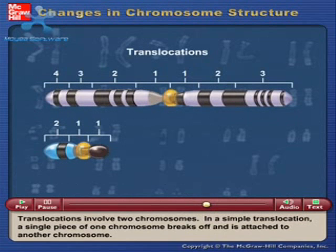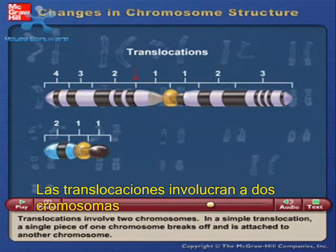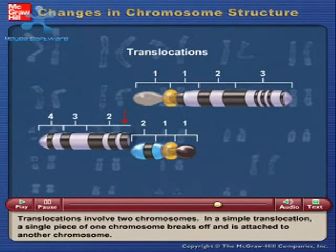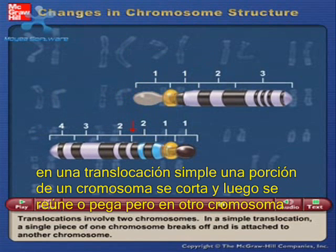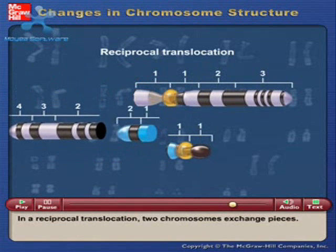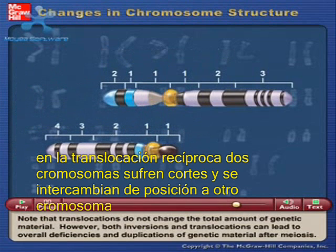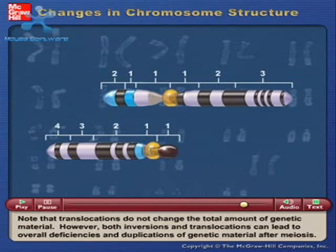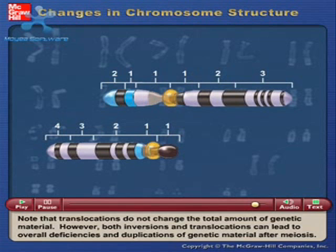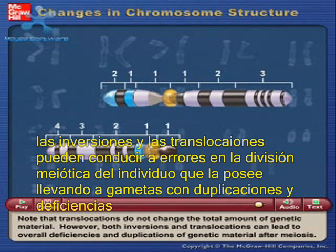Translocations involve two chromosomes. In a simple translocation, a single piece of one chromosome breaks off and is attached to another chromosome. In a reciprocal translocation, two chromosomes exchange pieces. Note that translocations do not change the total amount of genetic material. However, both inversions and translocations can lead to overall deficiencies and duplications of genetic material after meiosis.